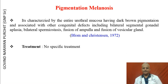Pigmentation melanosis is characterized by the entire urethral mucosa having dark brown pigmentation, and is associated with congenital defects including bilateral segmental gonadal aplasia, bilateral spermiostasis, fusion of the ampulla, and fusion of the vesicular gland. There is no specific treatment.